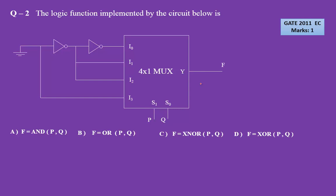The next question was asked for 1 mark in GATE 2011. Again we have to find out the function being implemented. This point is shown as ground, so this is logic 0. We are getting 1 here, 1 here, and 0 here. So writing the function: 0·P bar·Q bar + 1·P·Q bar + 1·P bar·Q + 0·P·Q. We are left with P·Q bar + P bar·Q, which is P XOR Q. So option D is correct.